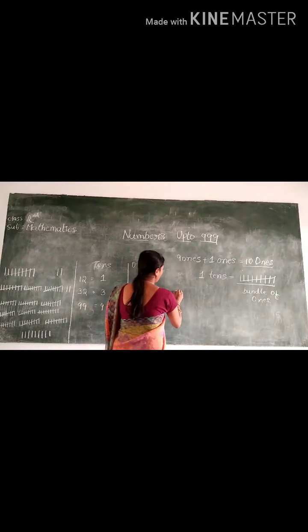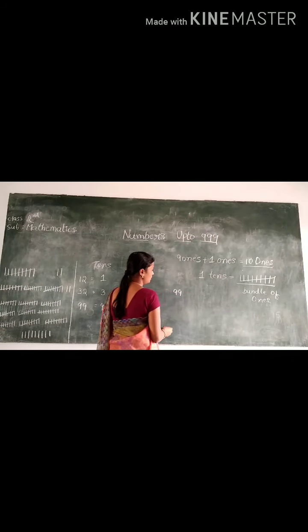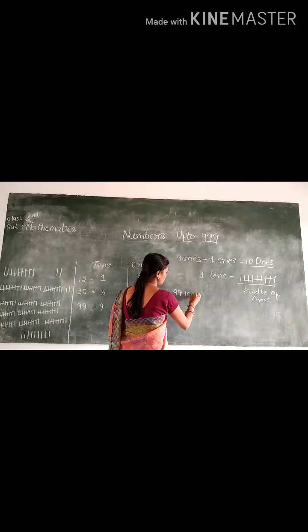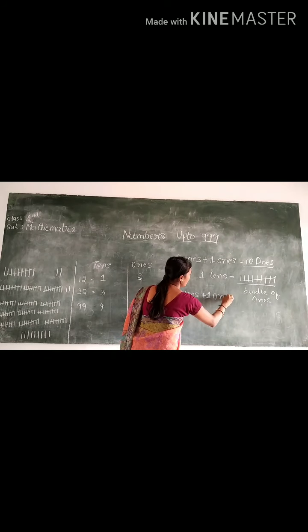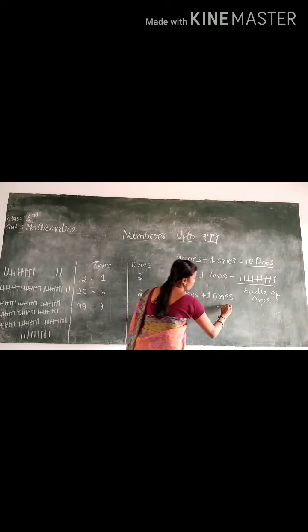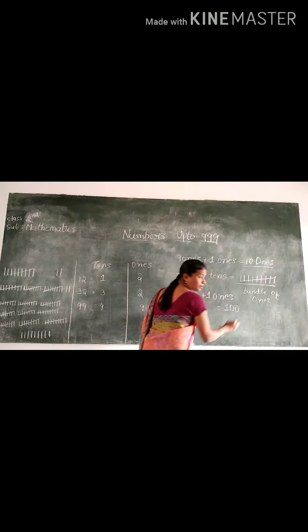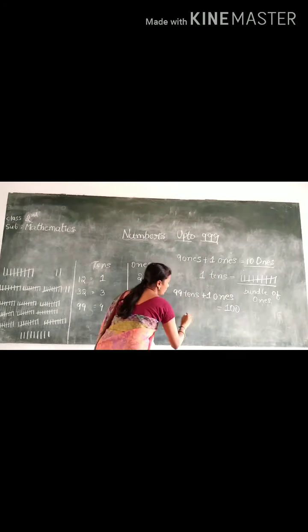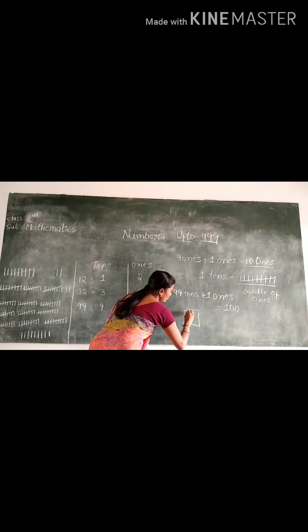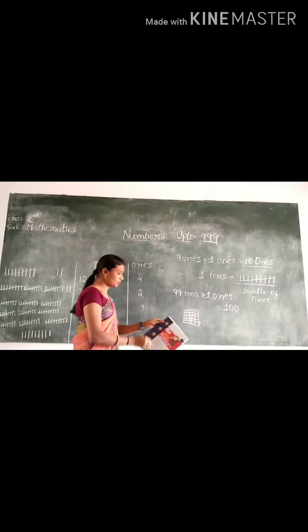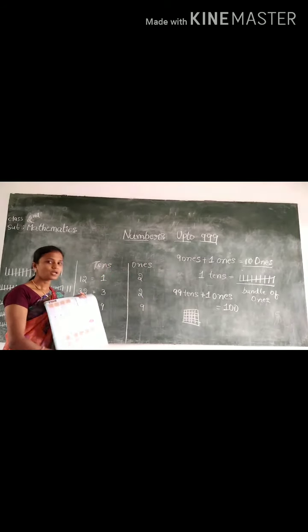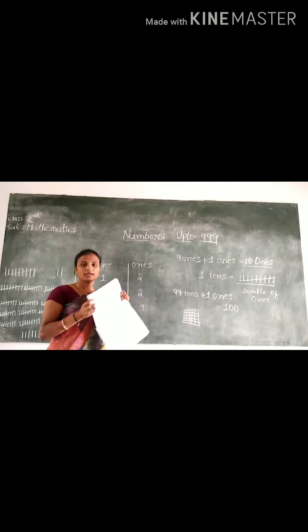Did you get this? If we add 99 and 1, it will become 100, right? 100 can be written in the form of boxes. See in your textbook.